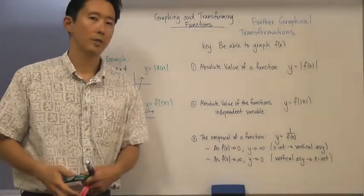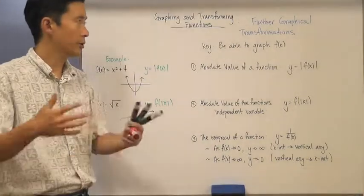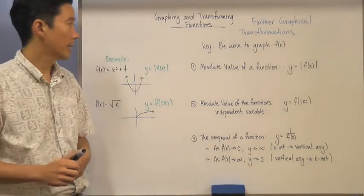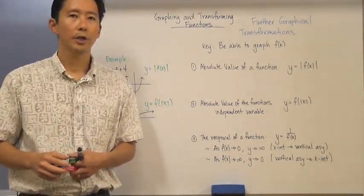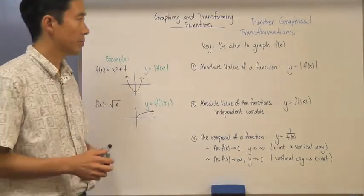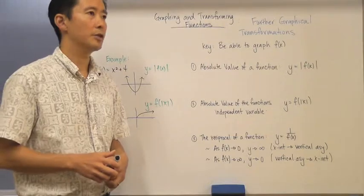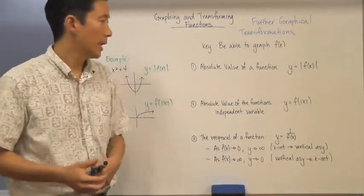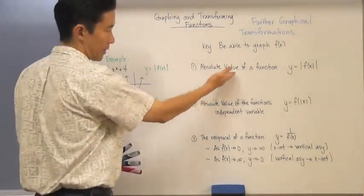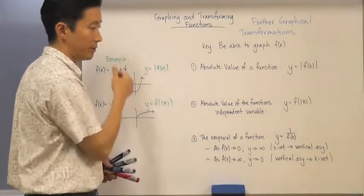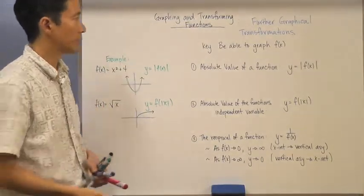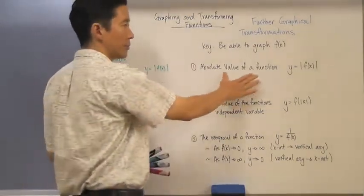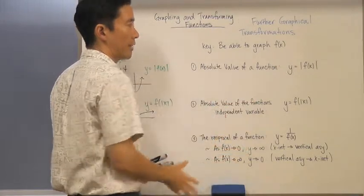Let's take a look at graphing and transforming functions - further graphical transformations. These are the last three transformations that don't necessarily have anything to do with a particular parameter. We're going to apply certain functions to a particular function to see what happens: the absolute value of f(x), the absolute value of x inside f, and taking the reciprocal function. The key, of course, is first to be able to graph f of x.